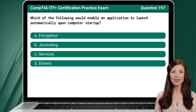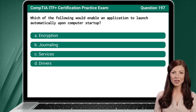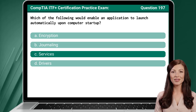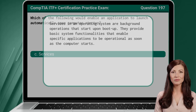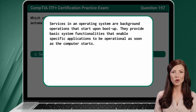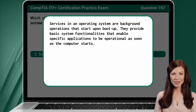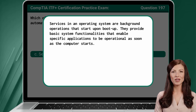Question 197. Which of the following would enable an application to launch automatically upon computer startup? The answer is C: Services. Services in an operating system are background operations that start upon boot up. They provide basic system functionalities that enable specific applications to be operational as soon as the computer starts.